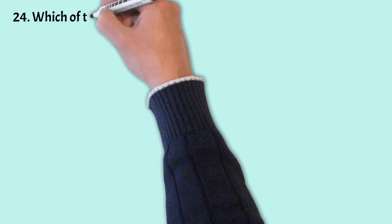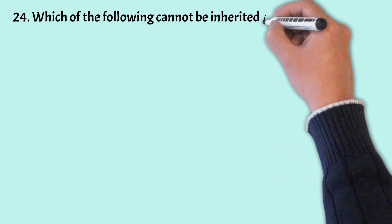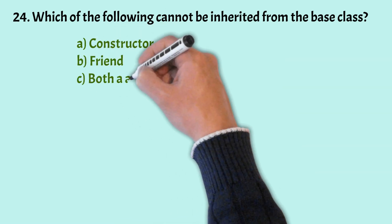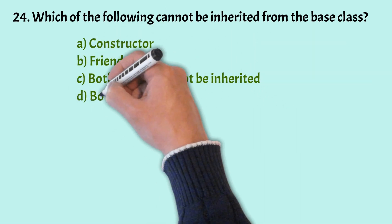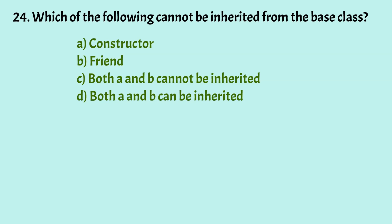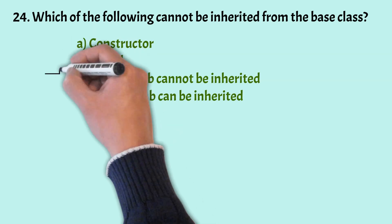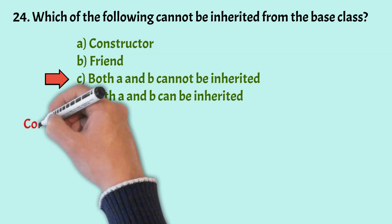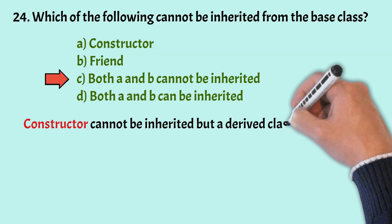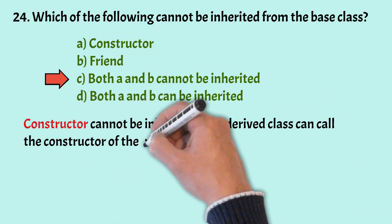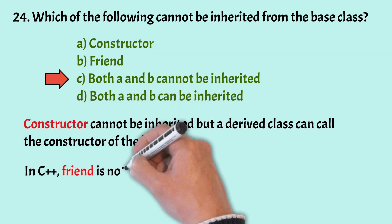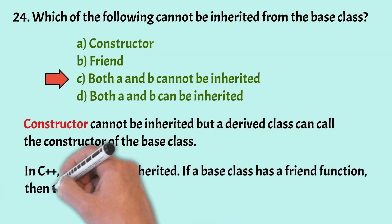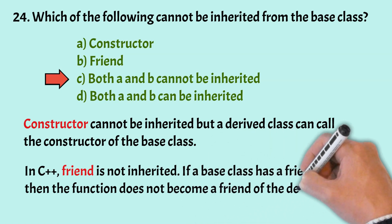Which of the following cannot be inherited from the base class? The options are constructor, friend, both A and B cannot be inherited, and both A and B can be inherited. The correct answer is option C — both constructors and friend functions cannot be inherited. A derived class can call the constructor of the base class, but constructors are not inherited. In C++, friend functions are also not inherited; if a base class has a friend function, it does not become a friend of the derived class.